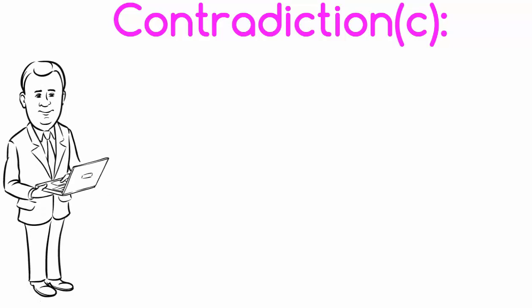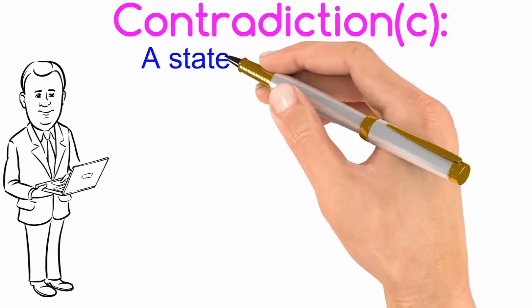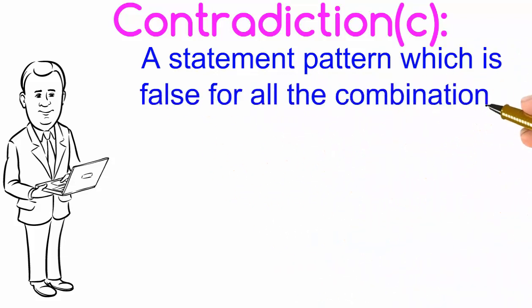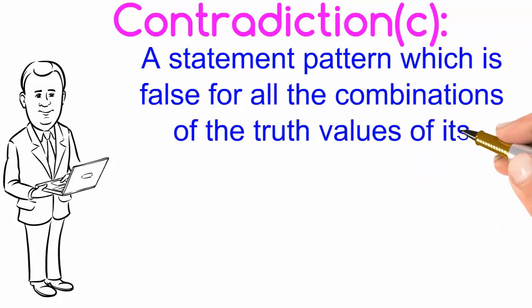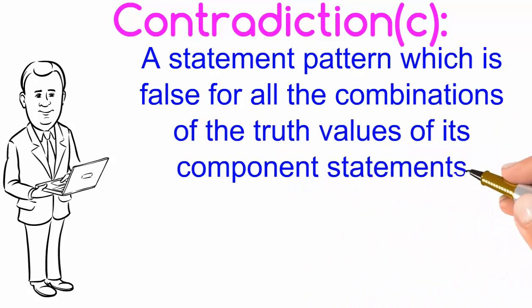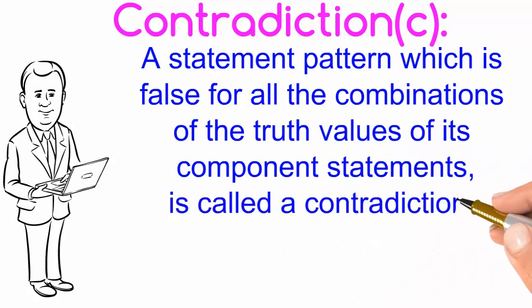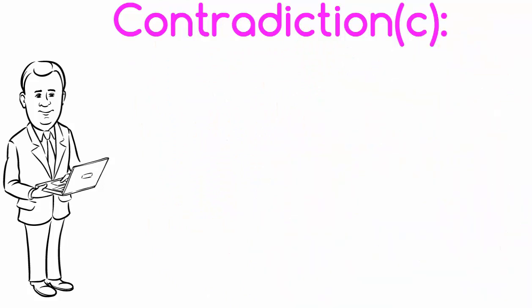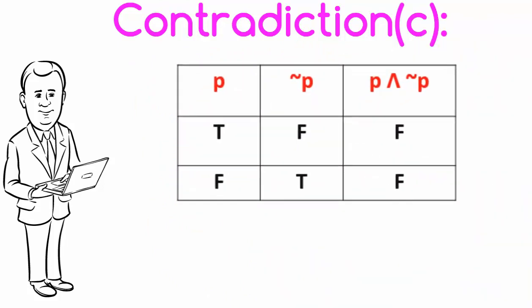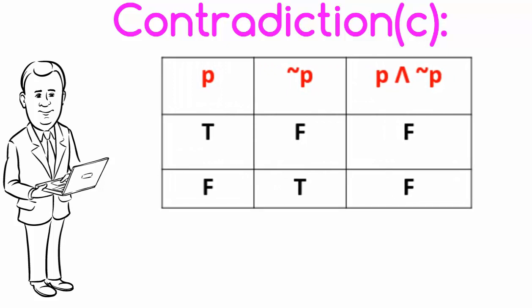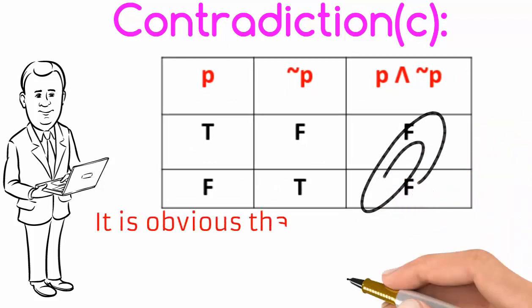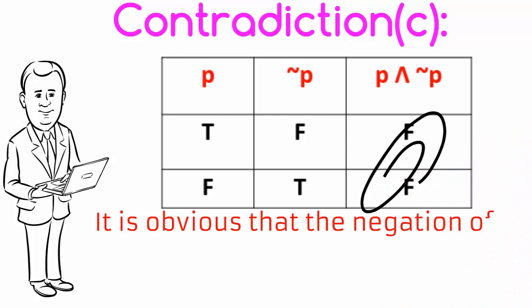Next is contradiction, denoted by small c. A statement pattern which is false for all the combinations of the truth values of its component statements is called contradiction. For example, p and negation of p. From the truth table, we observe that the last column contains only F.